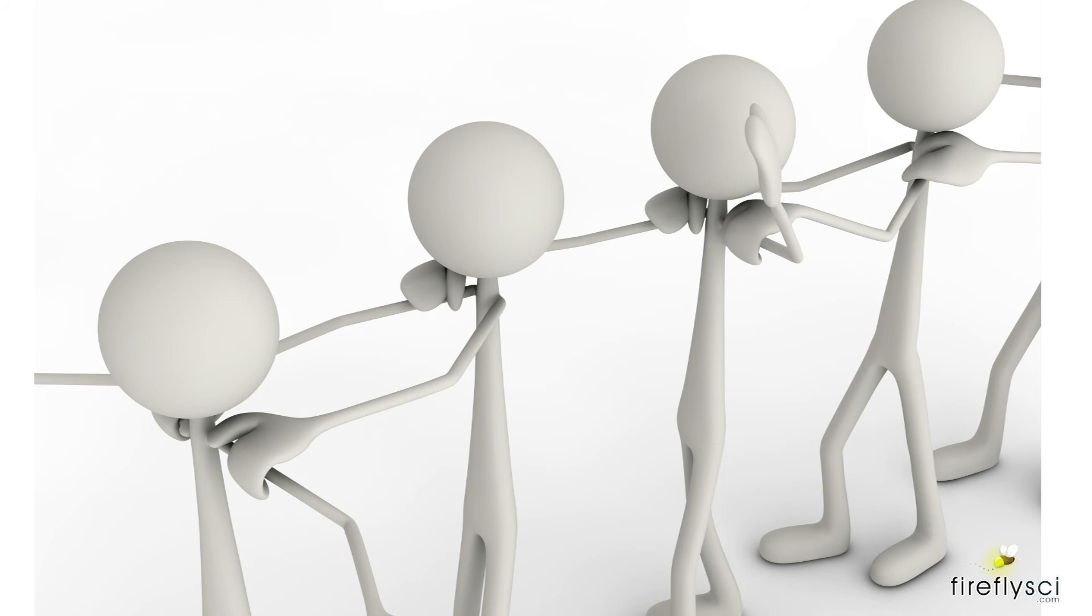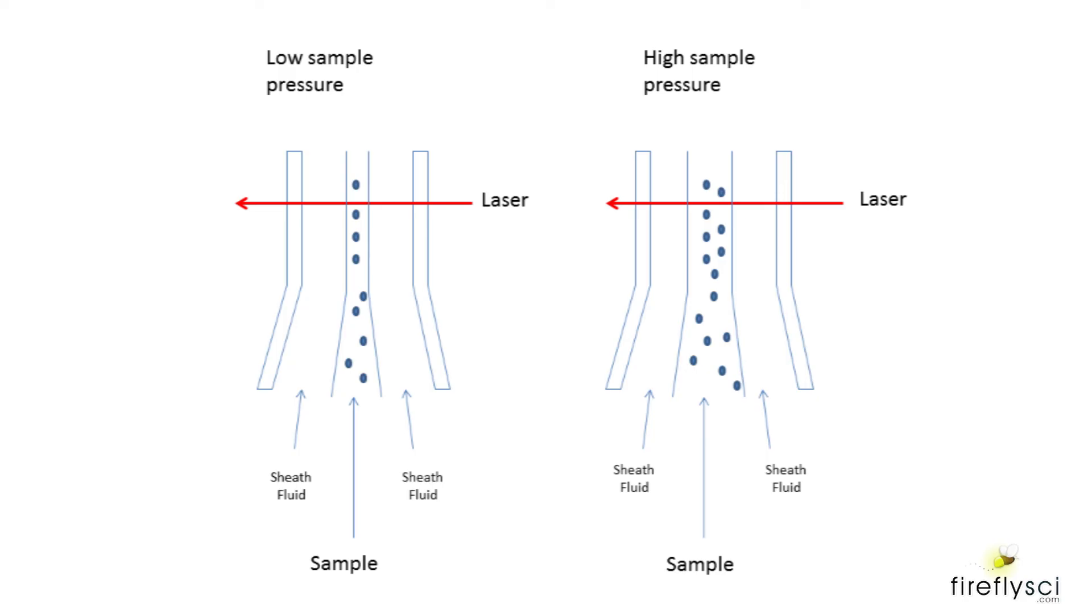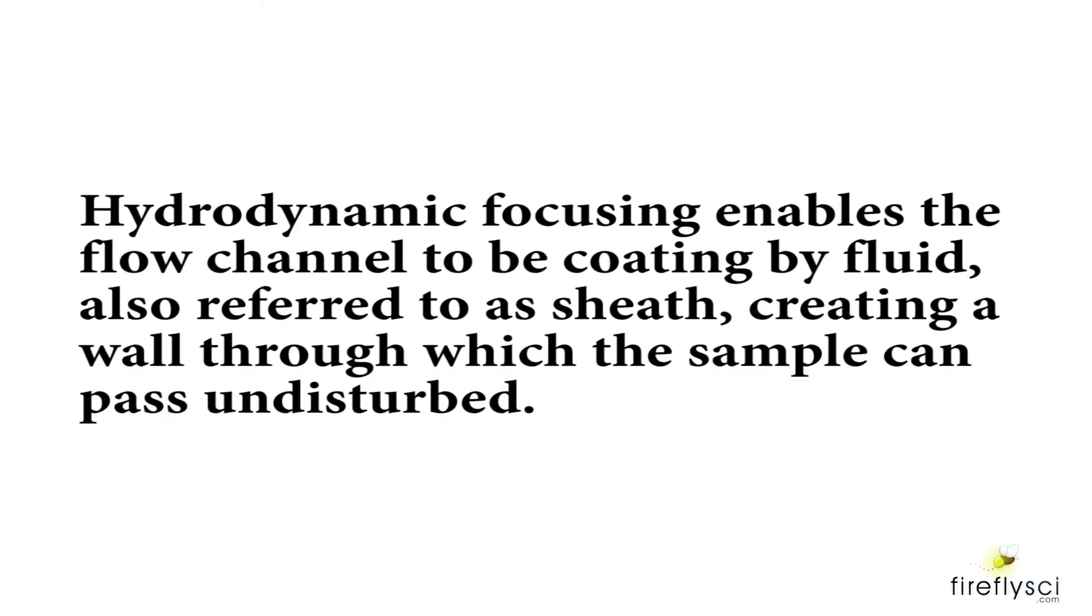The trick is to get all the cells to line up single-file like a conga line, so that they can be interrogated one at a time. This is where the principle of hydrodynamic focusing comes into play. Hydrodynamic focusing enables the flow channel to be coated by fluid, also referred to as sheath, creating a wall through which the sample can pass undisturbed.